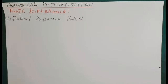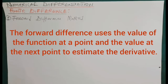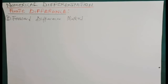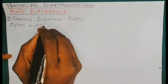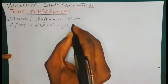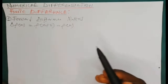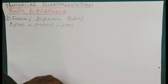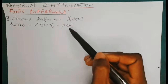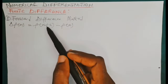The first type is the forward difference method. The forward difference uses the value of a function at a point and the value at the next point to approximate the derivative. By formula, delta f(x) is equal to f(x + h) minus f(x), where h is the step size. So you use the value of the function at a point f(x) and the value at the next point f(x + h).